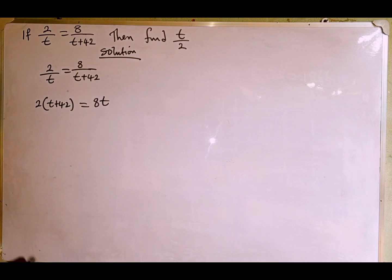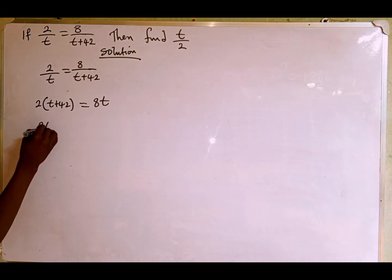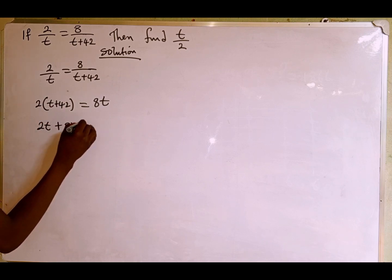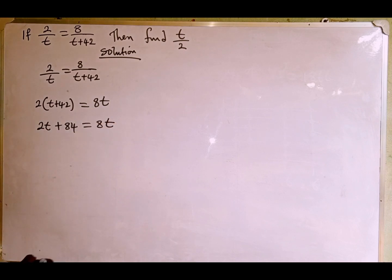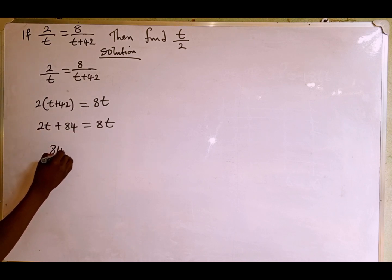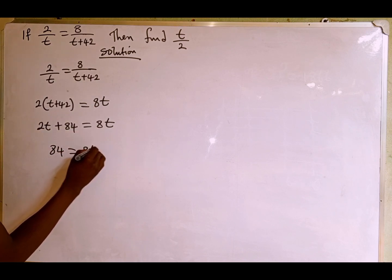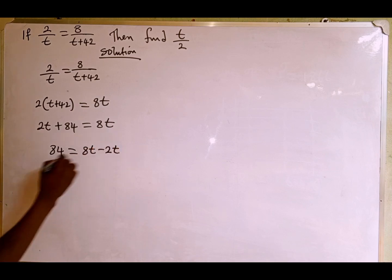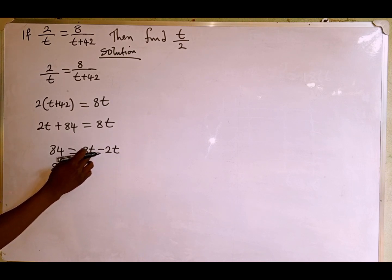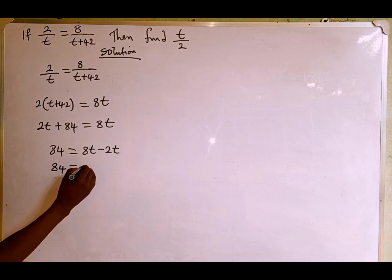Now we open the bracket: 2 multiplied by t gives us 2t, and 2 multiplied by 42 gives us 84, which is equal to 8t. The next thing we do is combine the like terms. We take 2t to the other side of the equation, giving us 84 equals 8t minus 2t, which simplifies to 84 equals 6t.